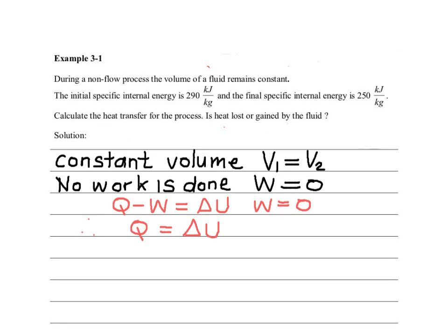Remember, the internal energy is computed in the following way. It is equal to U2 minus U1. Let's proceed. The final, we are told, is 250. And the initial is equal to 290. This works out to be minus 40 kilojoule.